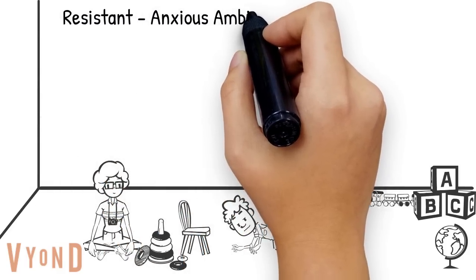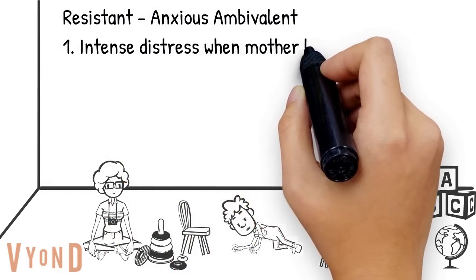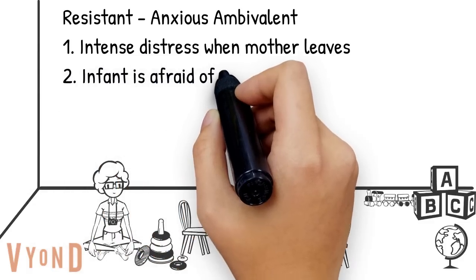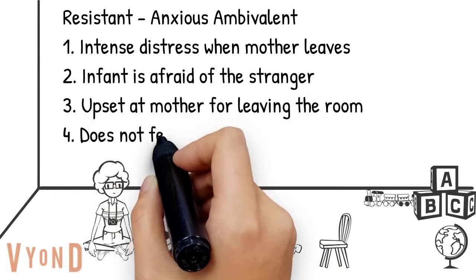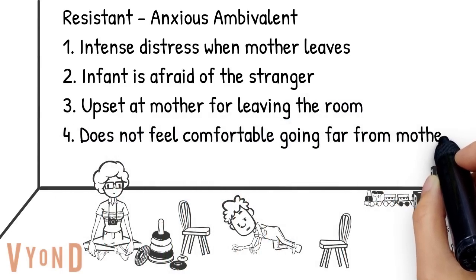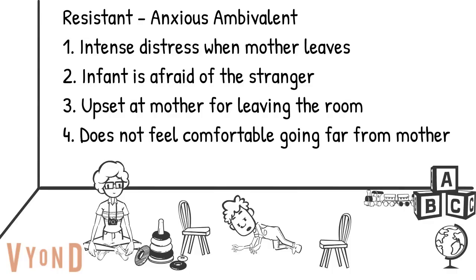The next attachment pattern is called resistant or anxious ambivalent. These children experience intense distress when the mother leaves — even more so than securely attached children — and the infant is generally afraid of the stranger. When the mother returns, the child is generally upset at her for leaving. Children with resistant or anxious ambivalent attachment generally have trouble exploring the room and stay very close to the mother. About 15% of children have this pattern, and it has been associated with child abuse and is generally less adaptive than secure attachment.